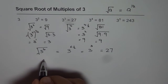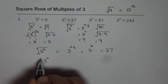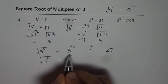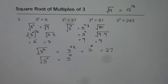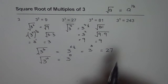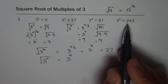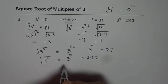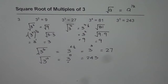For example, if I say square root of 3 to the power of 10 is equal to what? Half of 10 is 5, so you can always write 3 to the power of 5 as your answer. If you want the numerical value, 3 to the power of 5 is 243, but 3 to the power of 5 in itself is the right and acceptable answer.